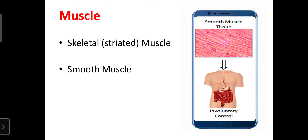Smooth muscle function is controlled by the unconscious part of the brain — there is no willpower needed to control smooth muscle functions. It is controlled by the unconscious part of the brain, so smooth muscles are known as involuntary muscles. Skeletal muscle contraction is regulated by neurons or the conscious part of the brain, so skeletal muscles are known as voluntary muscles.